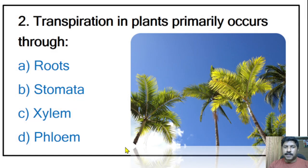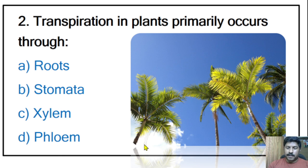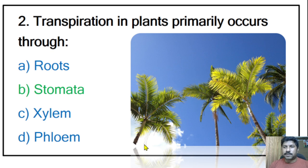Second question: transpiration in plants primarily occurs through roots, stomata, xylem, or phloem? The correct answer is stomata. Stomata are tiny pores on leaves that regulate transpiration — that is water loss — and gas exchange, allowing carbon dioxide in and oxygen out.